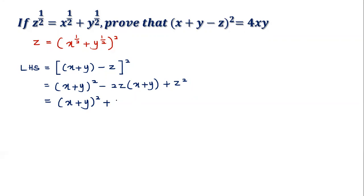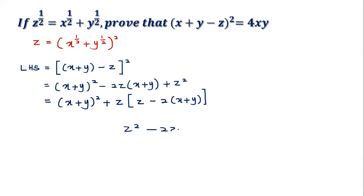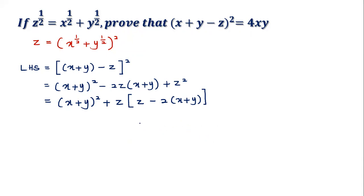Factorizing the z terms: I take z in front, giving z times z as z². So I have z² minus 2z(x + y). This is a suggested answer — your lecturer or tutor might have a different approach. You can discuss and choose whichever method is more understandable for you.